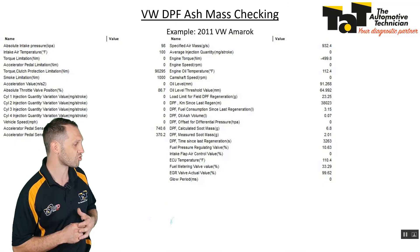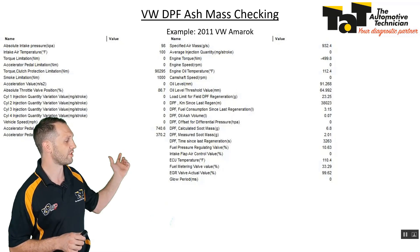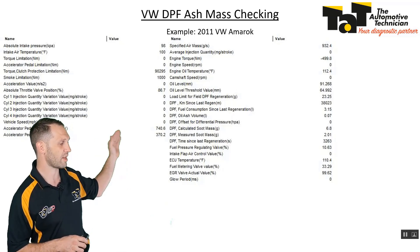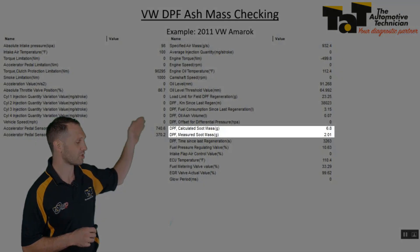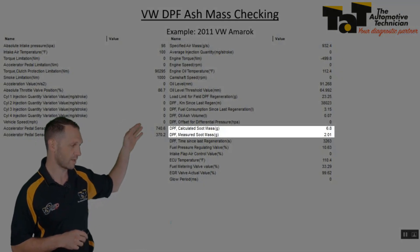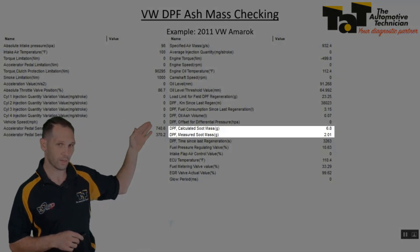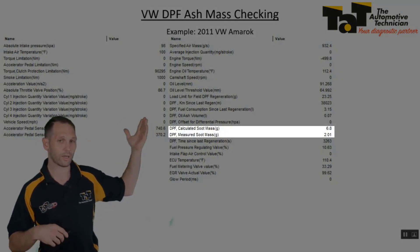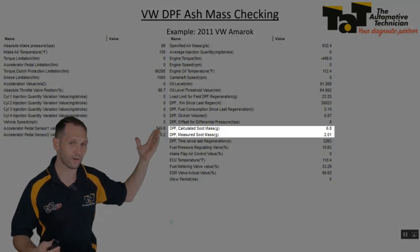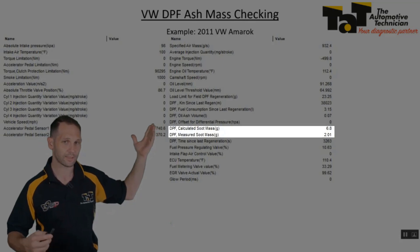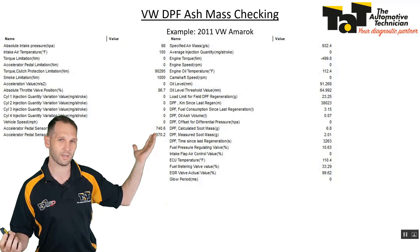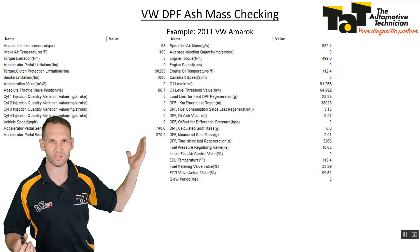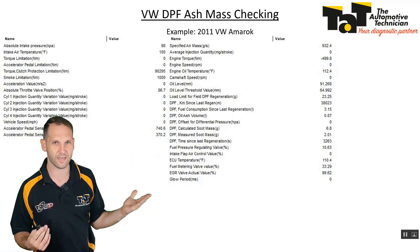One that's extremely important is if we move down to the DPF calculated soot mass and the DPF measured soot mass. Now we've got a calculated value and we've got a measured value — what does that mean? Are they not the same thing? What are they trying to tell us there?